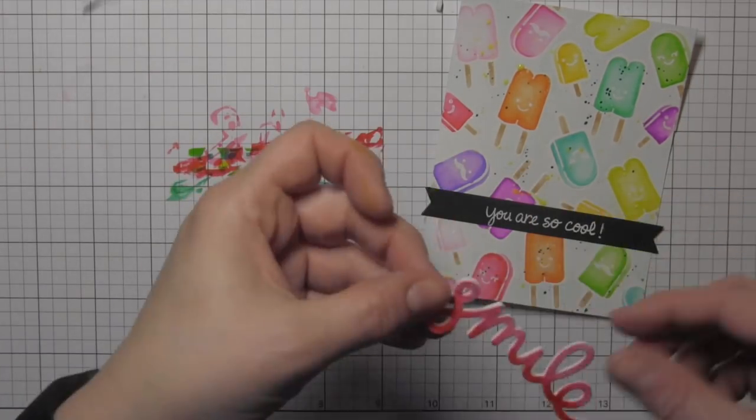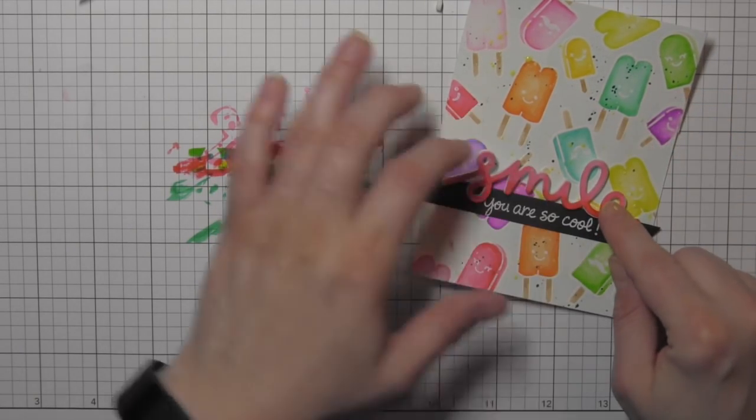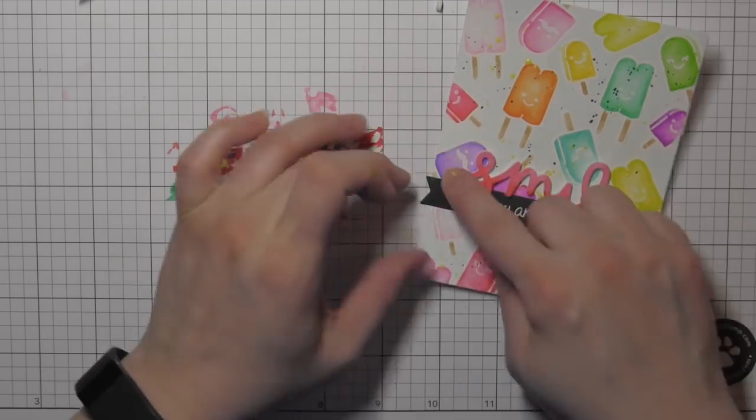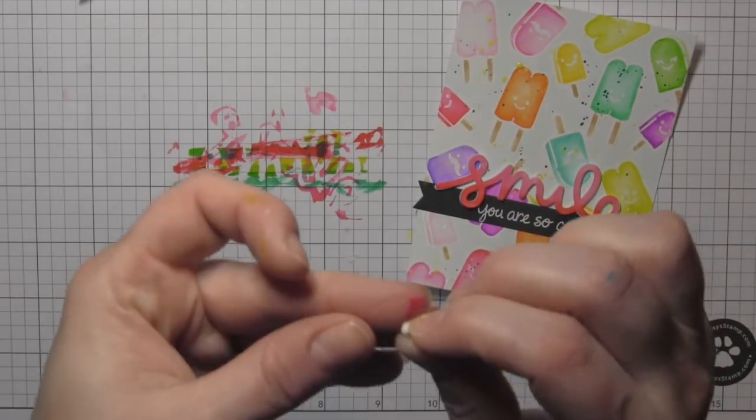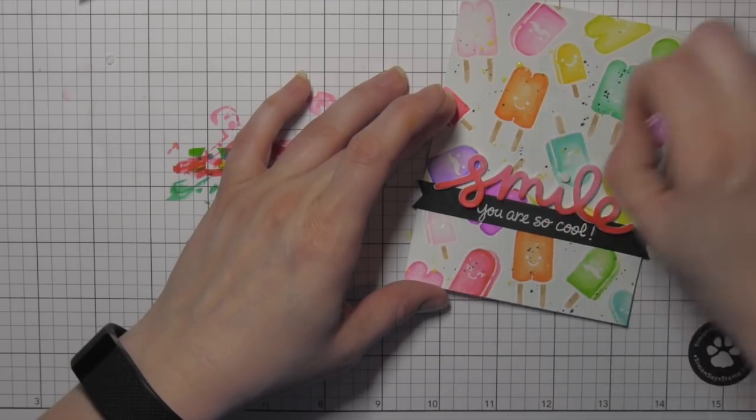I'll pull off the backing paper from the back of the word smile and set that right on top of my banner. And then I'll take the little dot from the letter i there and go ahead and pop that in place.